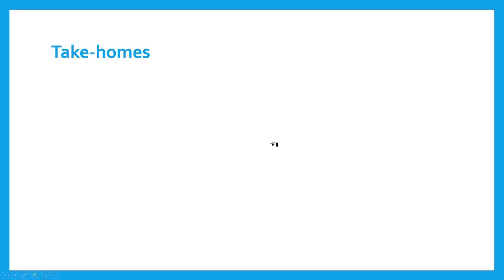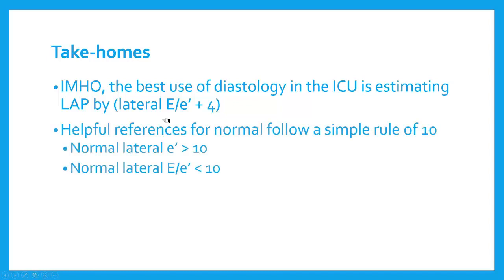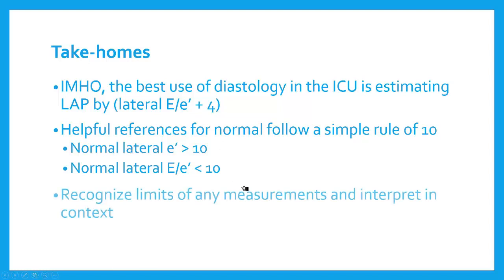Diastolic function — this is part three of three lectures. Two big take-home messages. First, in my opinion, the best use of diastology in the ICU is clearly for estimating left atrial pressure, and the easiest way to do that is just your lateral E to E-prime plus four. Helpful references follow a simple rule of 10: a normal lateral E-prime is greater than 10, and a normal lateral E to E-prime ratio is less than 10. The septal cutoff is a little lower at 7. Second, always recognize the limits of any measurement and interpret things in context. When you get an E to E-prime ratio less than 10 but the patient is anasarcic, they still probably need diuresis. Or if there's significantly depressed systolic and diastolic function with low flow, things may not be as abnormal as you think. Always recognize the limitations of echo measurements.